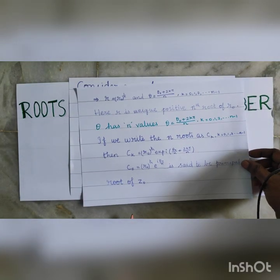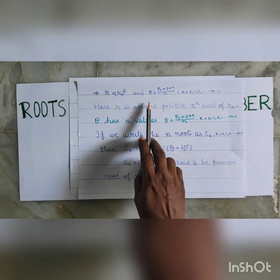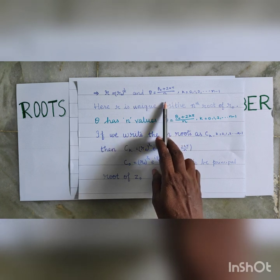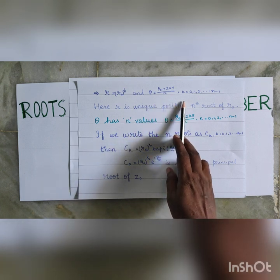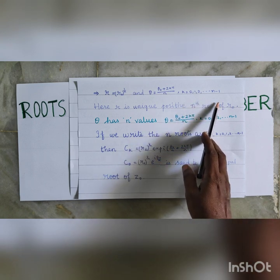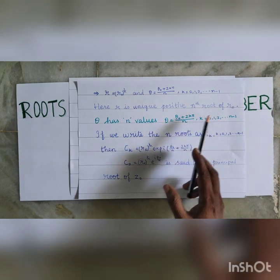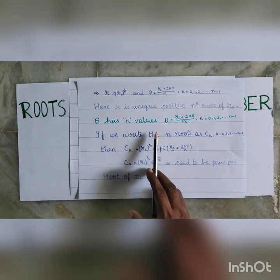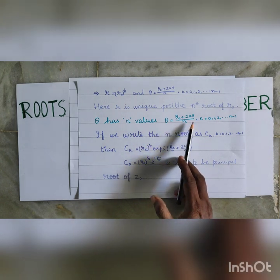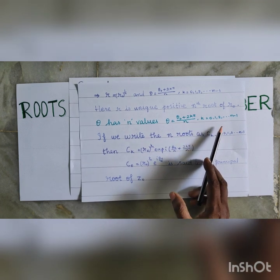This implies R equal to R0 power 1 by n and theta equal to theta 0 plus 2k pi divided by n, where k takes the values 0, 1, 2, etc., up to n minus 1. Here R is the unique positive nth root of R0. Theta has n values — that is, theta equal to theta 0 plus 2k pi divided by n, k varies from 0 to n minus 1. That is, we have n roots.